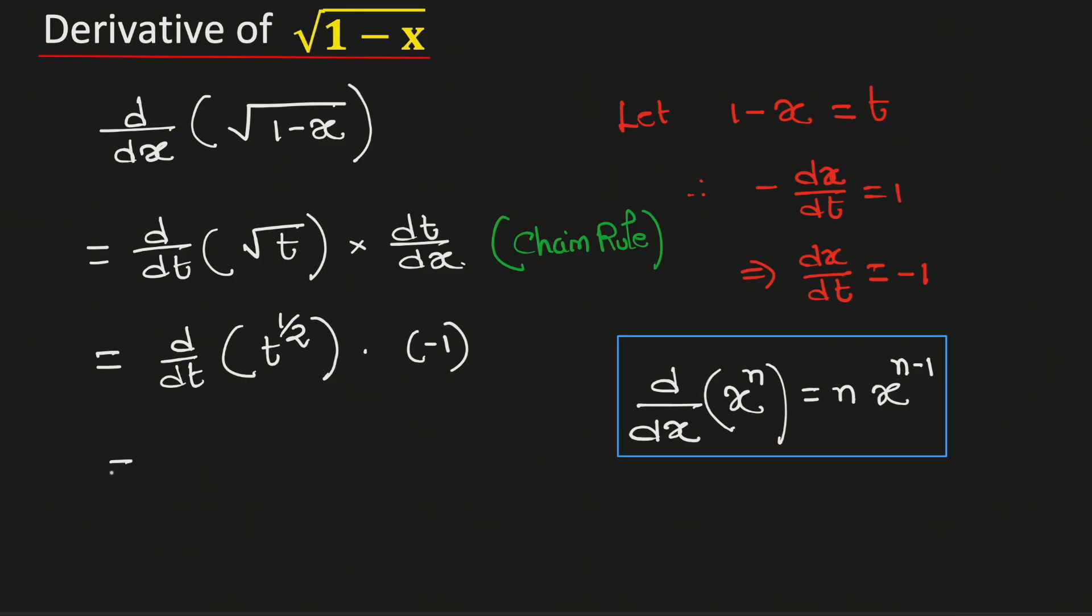Therefore, this will be equal to negative 1 half times t to the power 1 half minus 1.